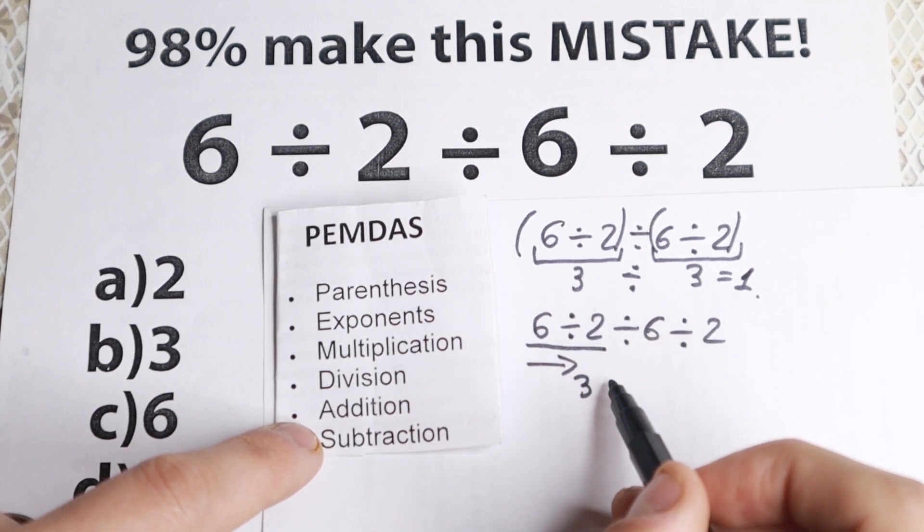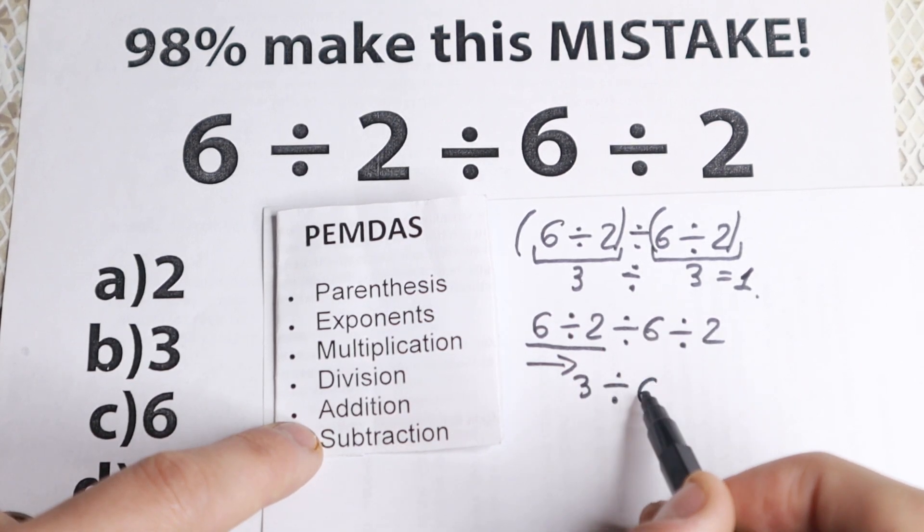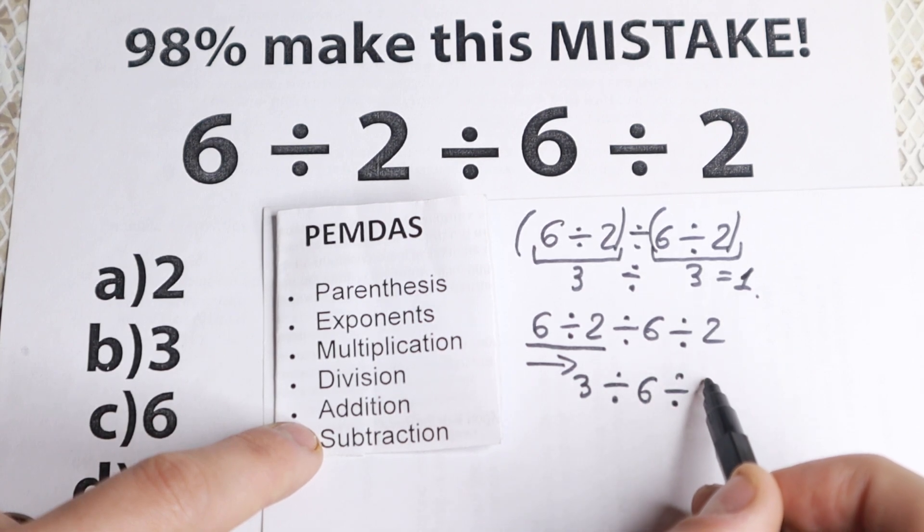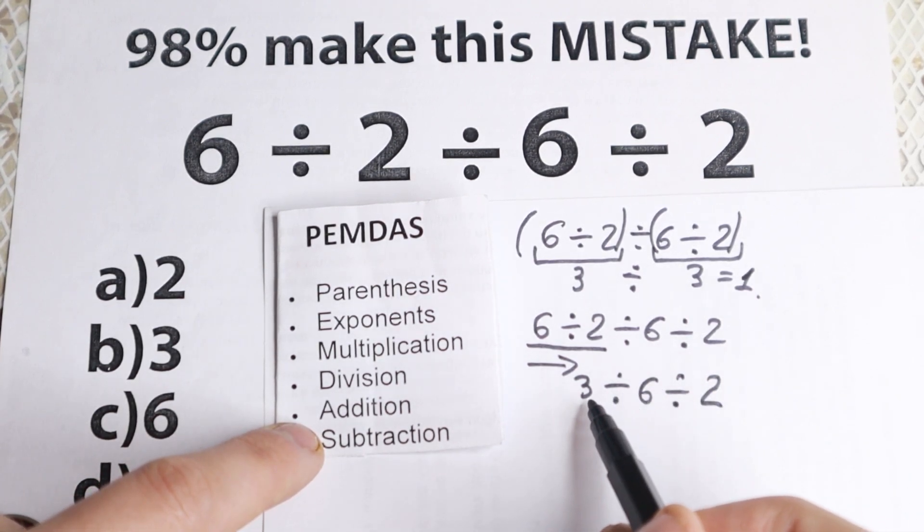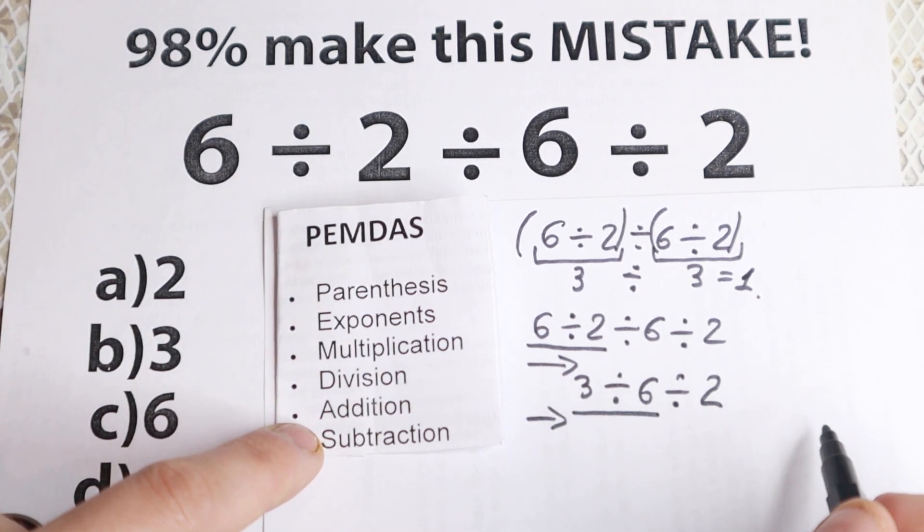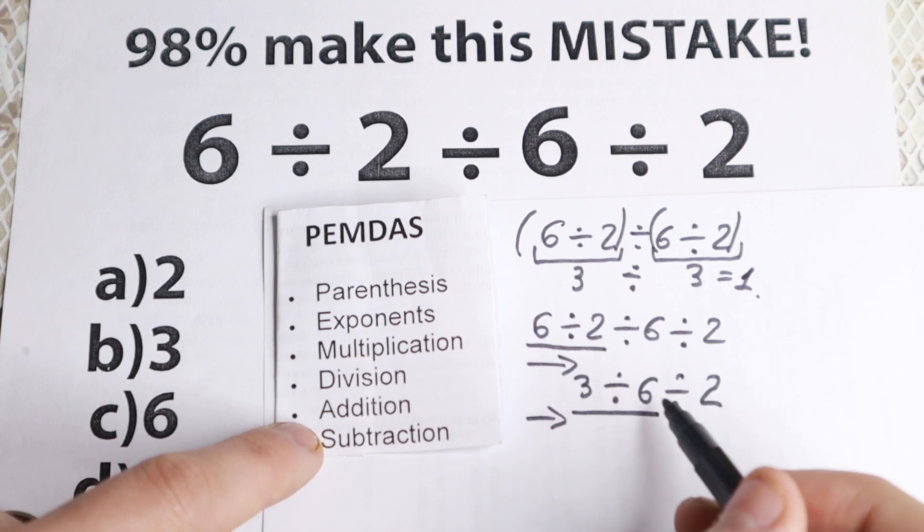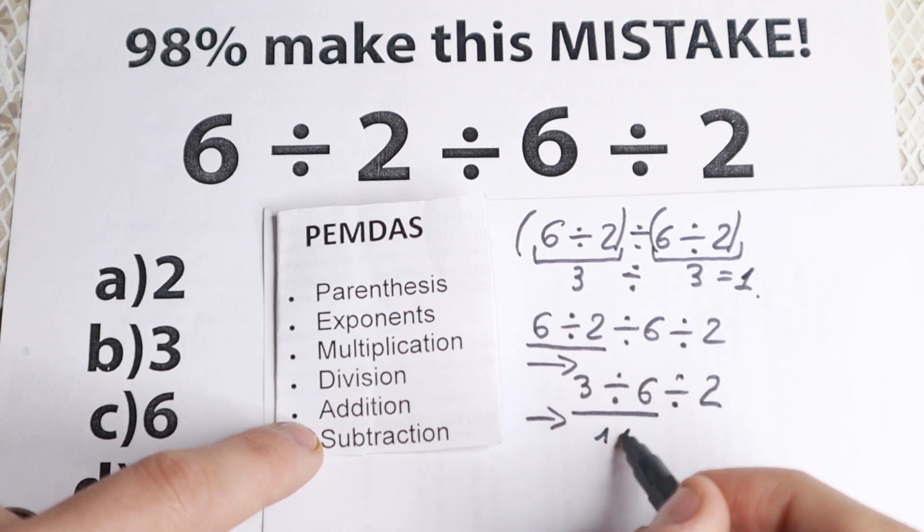And we still have this expression, dividing by 6 and dividing by 2. And then from left to right as well, because we still have division. So from left to right. So we have 3 divided by 6, this is 1 half, and dividing by these 2.